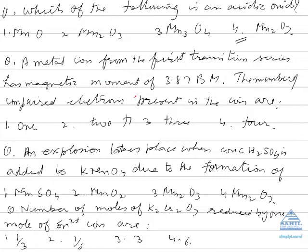A metal ion from first transition series has magnetic moment 3.87 Bohr magneton. The number of unpaired electrons present: the magnetic moment equals square root of n(n+2), which equals 3.87. You can square 3.87 and get the value of n. Suppose it has one unpaired electron, the value comes out to be square root of 3, that is 1.73.